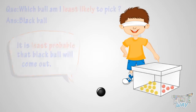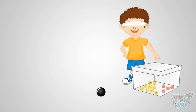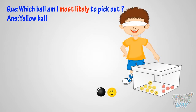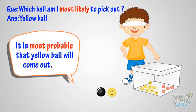Now, if I pick out any one ball from the box without looking into the box, which ball am I most likely to pick? Most likely, yellow ball. Because most number of balls in the box are yellow, so it's most likely that if I pick one ball from the box it will be yellow. It is most probable that yellow ball will come out.